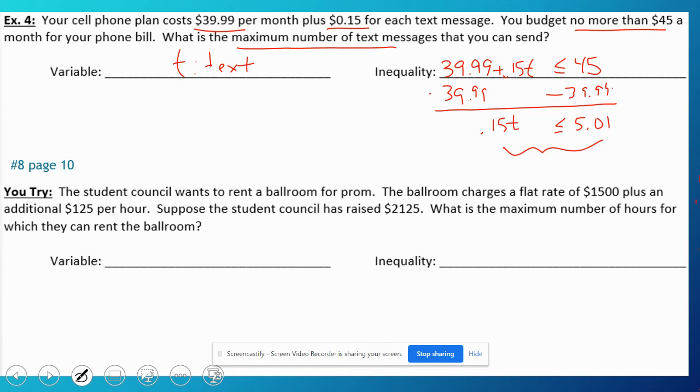Student council wants to rent a ballroom for prom. They charge a flat rate of $1,500 plus an additional hourly rate. Suppose the student council has raised $2,125—so that's the amount of money they have. So again, they cannot spend more than they have. So the variable is the number of hours.